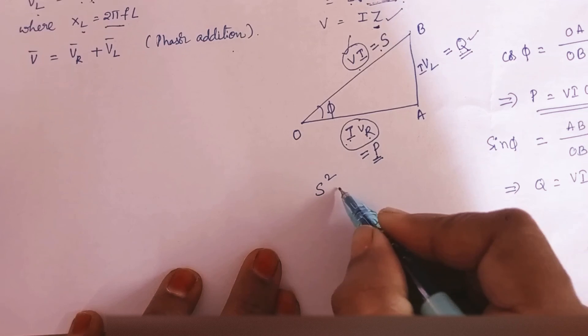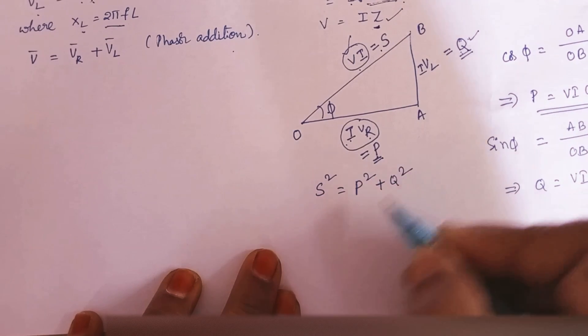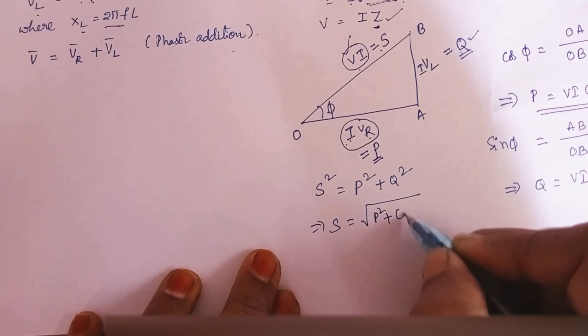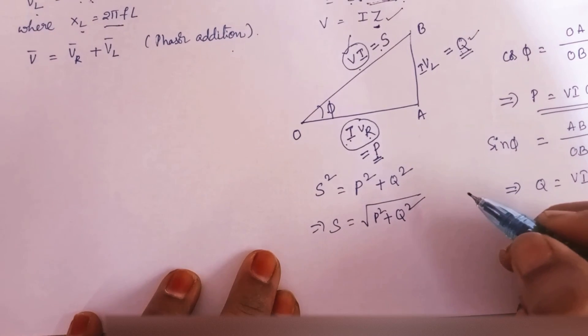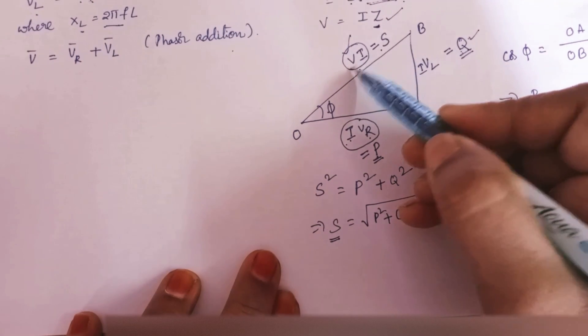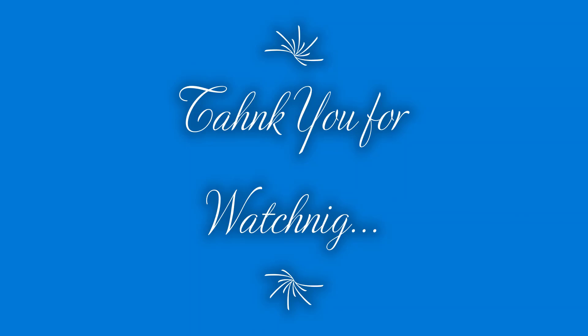And from this triangle only, the apparent power can be considered as like this. By simple Pythagoras theorem, you can write S equal to root of P square plus Q square. So this apparent power is a product of voltage and current. So unit will be volt ampere.